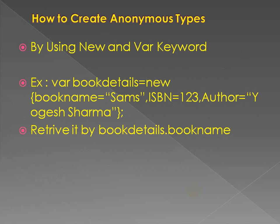To create an anonymous type, we use the 'new' keyword without specifying a type name. For example: 'var bookDetails = new { BookName = "Sams", ISBN = "123", Author = "Yogi Sharma" }'. To retrieve values, use the dot operator like 'bookDetails.BookName', where 'bookDetails' is the variable declared with 'var' and 'BookName' is the read-only property.